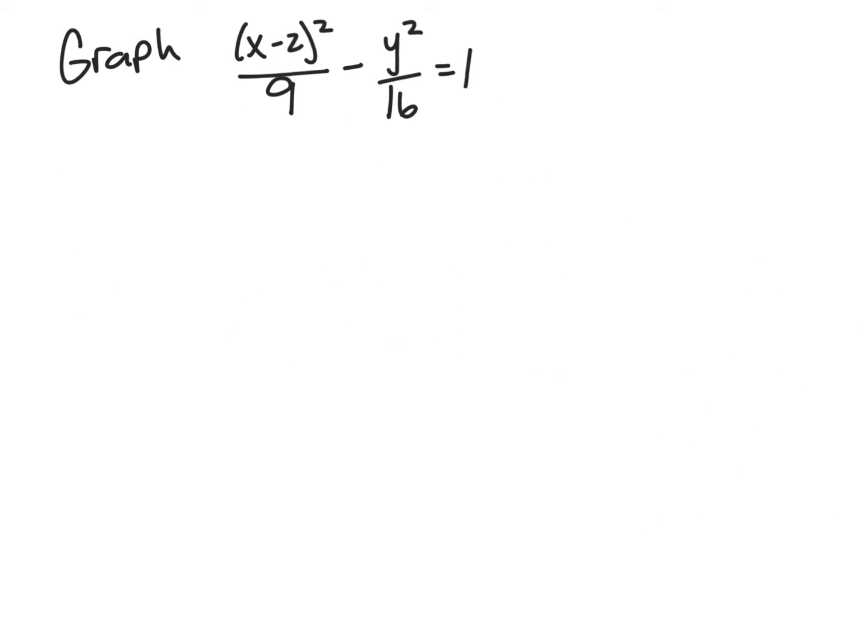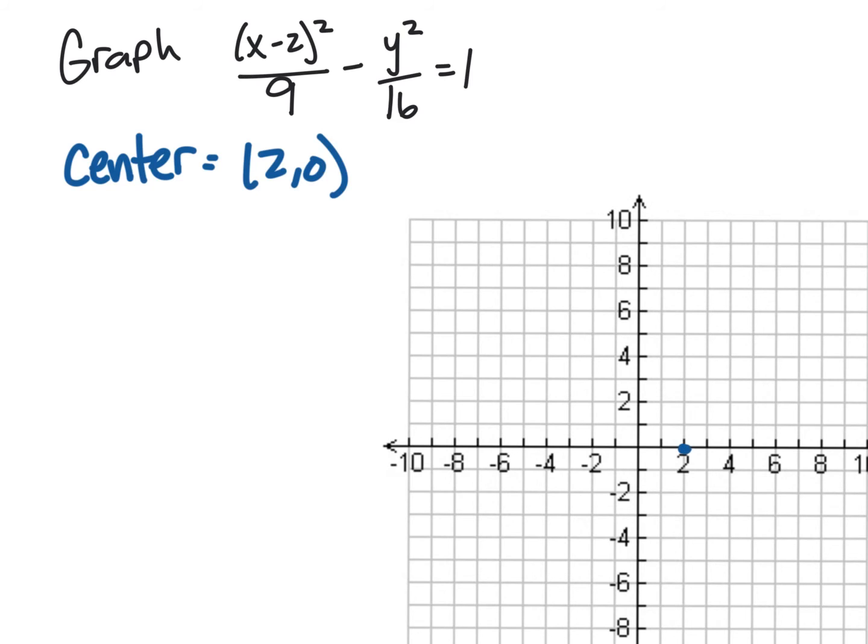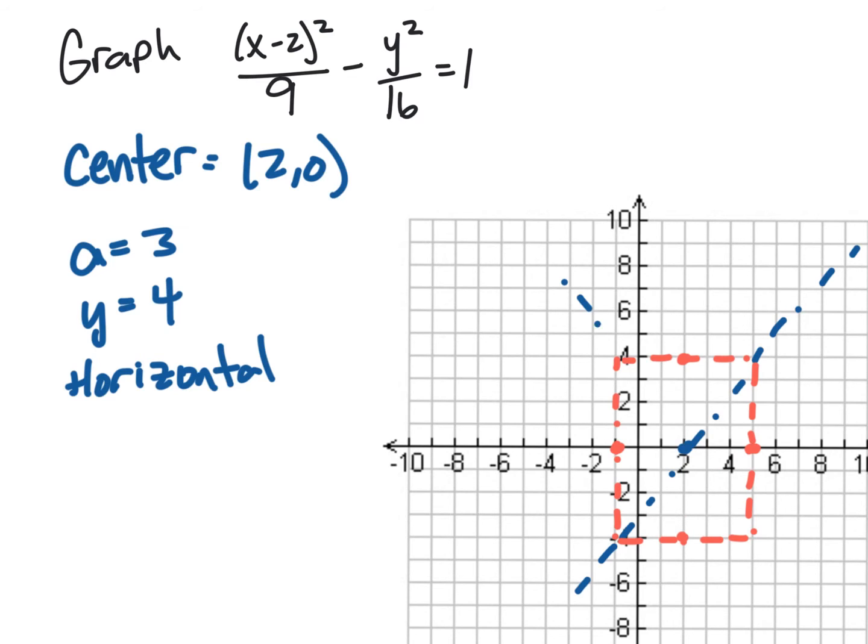All right, so let's try one. We're going to graph (x-2)²/9 - y²/16 = 1. So the very first thing that we can see is that the center is at (2,0). I'm going to plot that point. From the equation, we can also see that a would be equal to 3 and b would be equal to 4. And it's a horizontal because the x is positive. So we're going to count out 3 in the x direction both ways and 4 up and down. All right. So now use these to make a box and then draw the asymptotes through the box. Because it's a horizontal, these points will be the vertices, and I just don't touch the asymptotes.